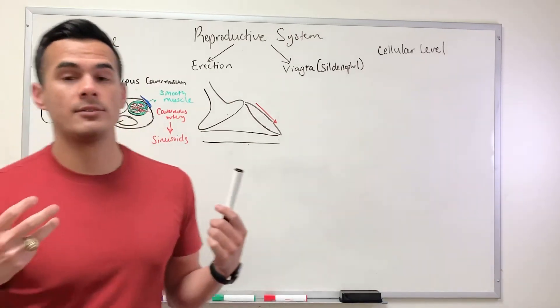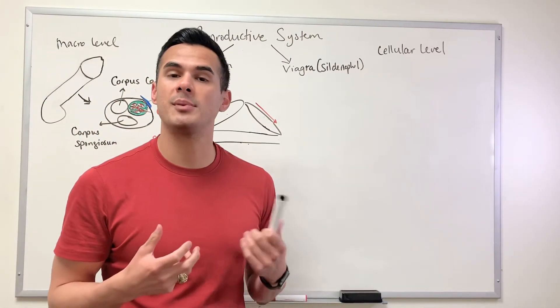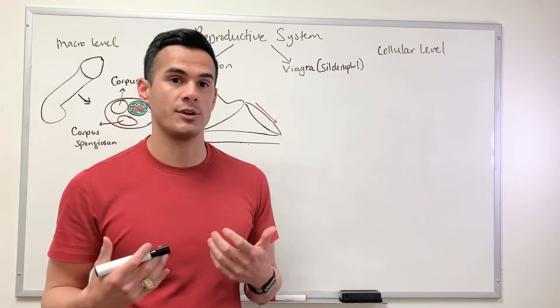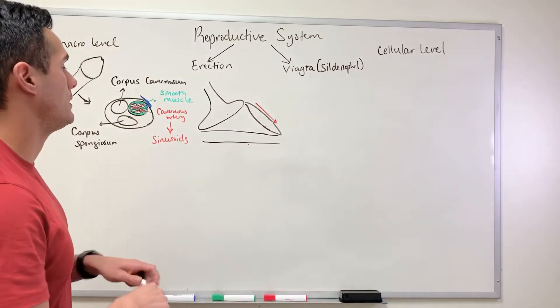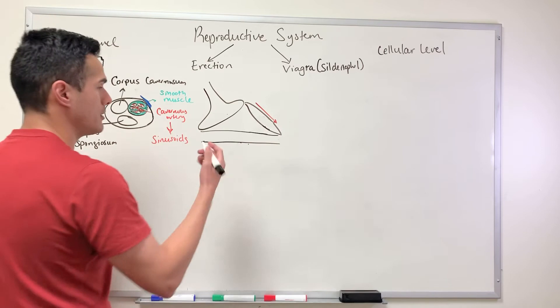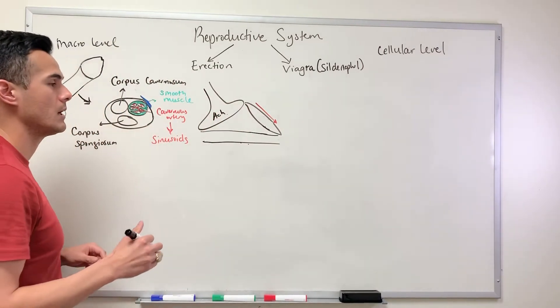In order for a man to have an erection, the parasympathetic nervous system has to be engaged. The parasympathetic nervous system is also known as rest and digest, or feed and breed. Coming down through this parasympathetic neuron, a neurotransmitter is released which is known as acetylcholine.